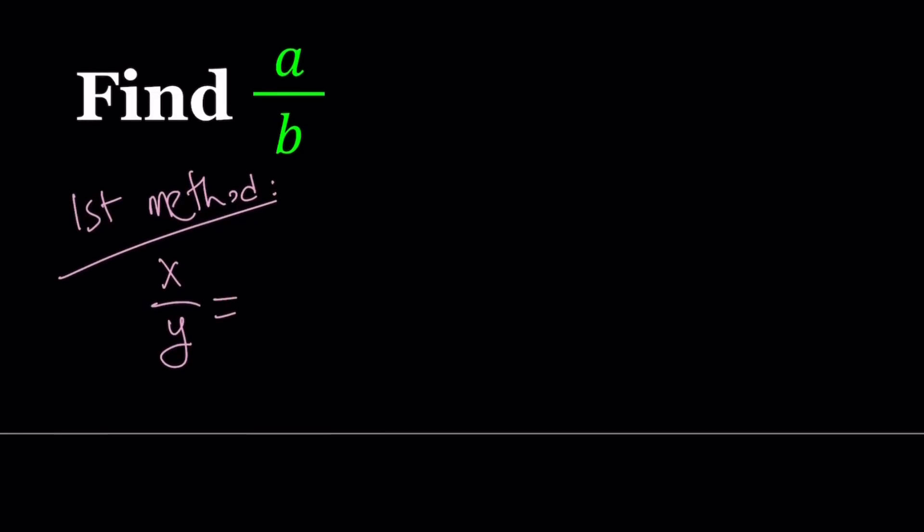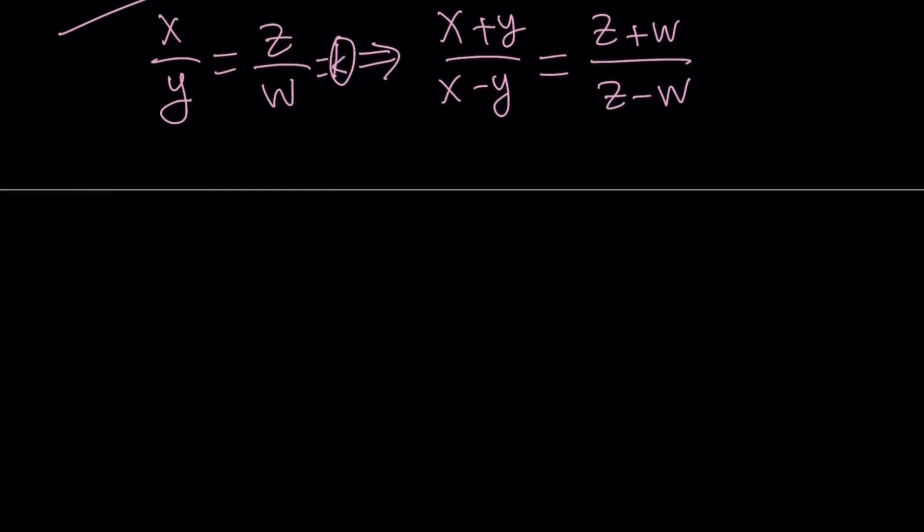If you have x over y equals z over w, that is kind of like a proportion. Then we can safely say that x plus y over x minus y is going to be the same as z plus w over z minus w. So whatever you do on the left hand side, as long as you do it on the right hand side, then those two ratios are going to be equal. And this is easy to prove. You can just go ahead and set both of these ratios equal to a constant like k. And then you can just plug it in and show how this works. So let's go ahead and use it in our problem.